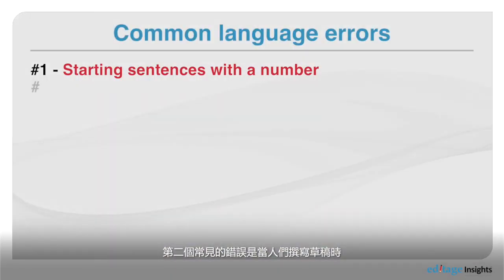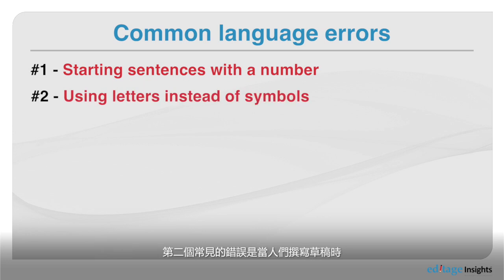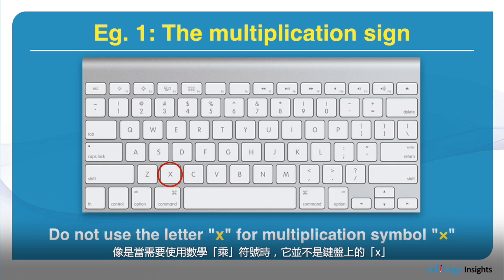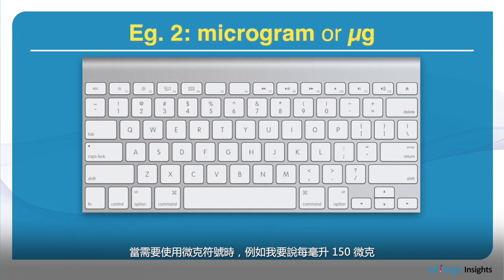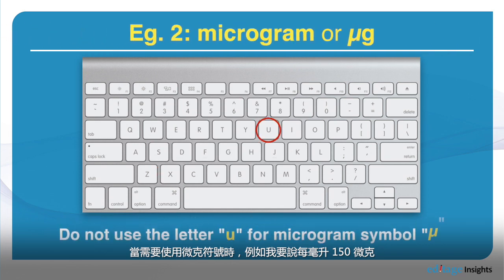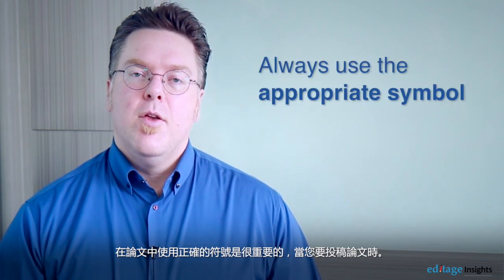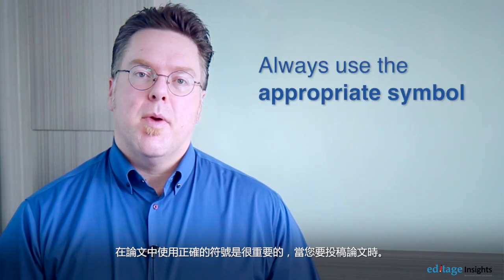Mistake number two is common when people are writing a draft. When writing a draft, they don't like to insert the proper symbols. When looking at a multiply sign, it isn't the X on the keyboard. When looking at micro — for example, if I say 100 microgram per milliliter — micro is not a U. It's a different symbol. It's important to put the proper symbol in your paper when you submit for publication.